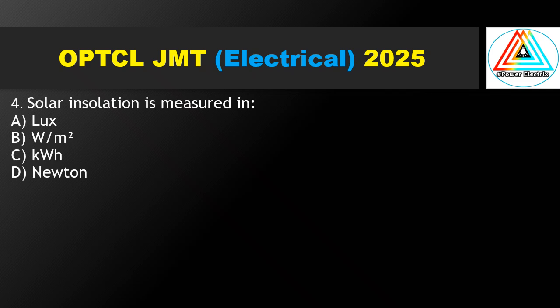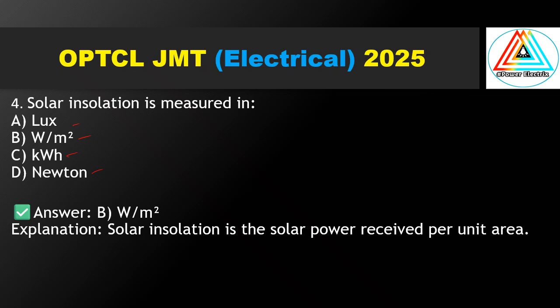Question No. 4: Solar insolation is measured in — logs, watts per meter square, kilowatt hour, or newton? The correct answer is watts per meter square. Solar insolation measures solar power received per unit area; power unit is watts and area unit is meter square. Option B is correct.